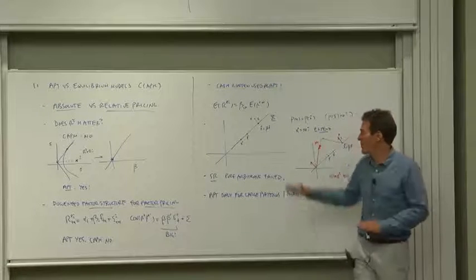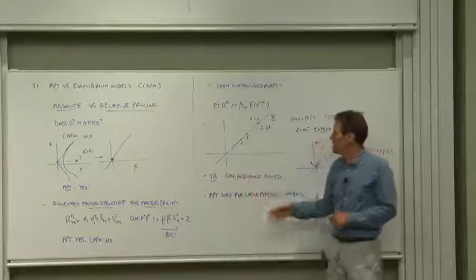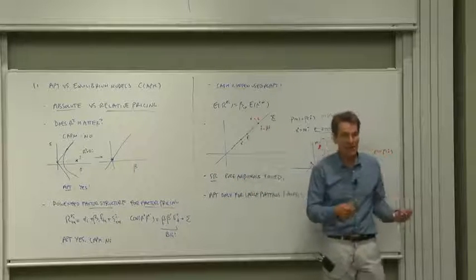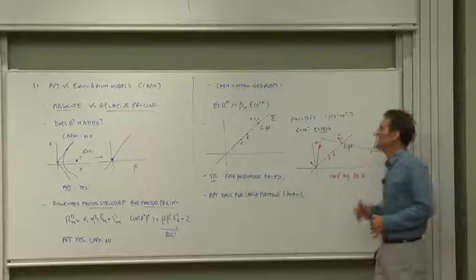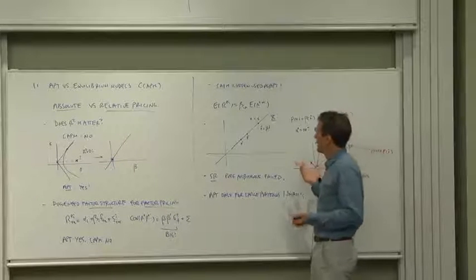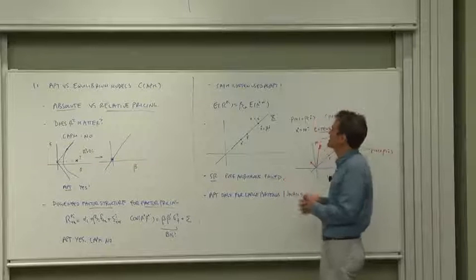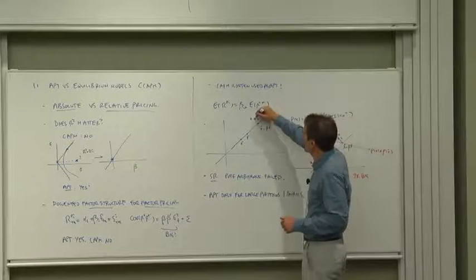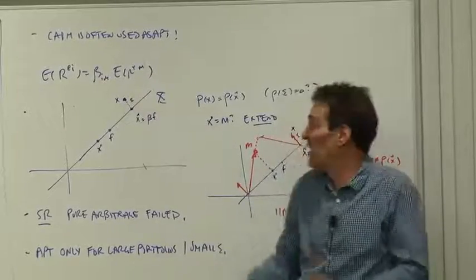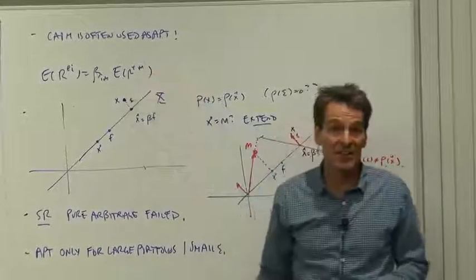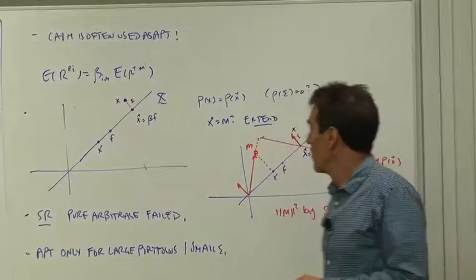We know the prices on this payoff space. The rules of the game are, we're not arguing about whether the factors are correctly priced. We want to know, is the new payoff x priced correctly given the prices of the factors. That's the APT philosophy. Well, what does the APT say about this? Pure arbitrage says, I can't tell you anything. This thing isn't in the space of included payoffs.